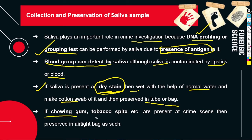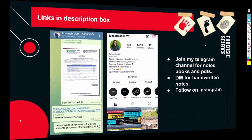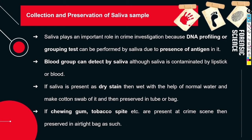If we get chewing gum, tobacco, or spits at the crime scene, we will preserve them in airtight bags. If we get tobacco spit, we can also preserve it this way. So if it is dry, we wet it with a cotton swab, and if we get chewing gum, we put it directly into the bag. We preserve saliva like this, and this is very helpful in DNA profiling and grouping tests.